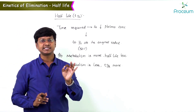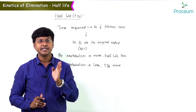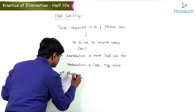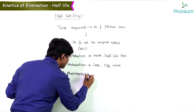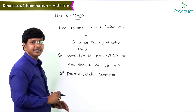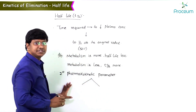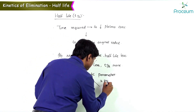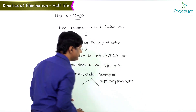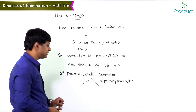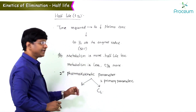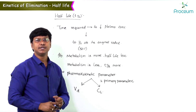Half-life is a secondary pharmacokinetic parameter, derived from two primary parameters: volume of distribution and clearance.